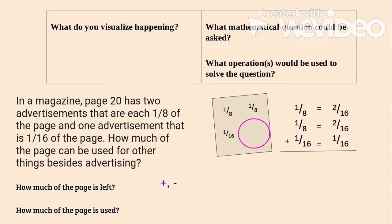One-eighth equals two-sixteenths. Two plus two plus one would be five-sixteenths.